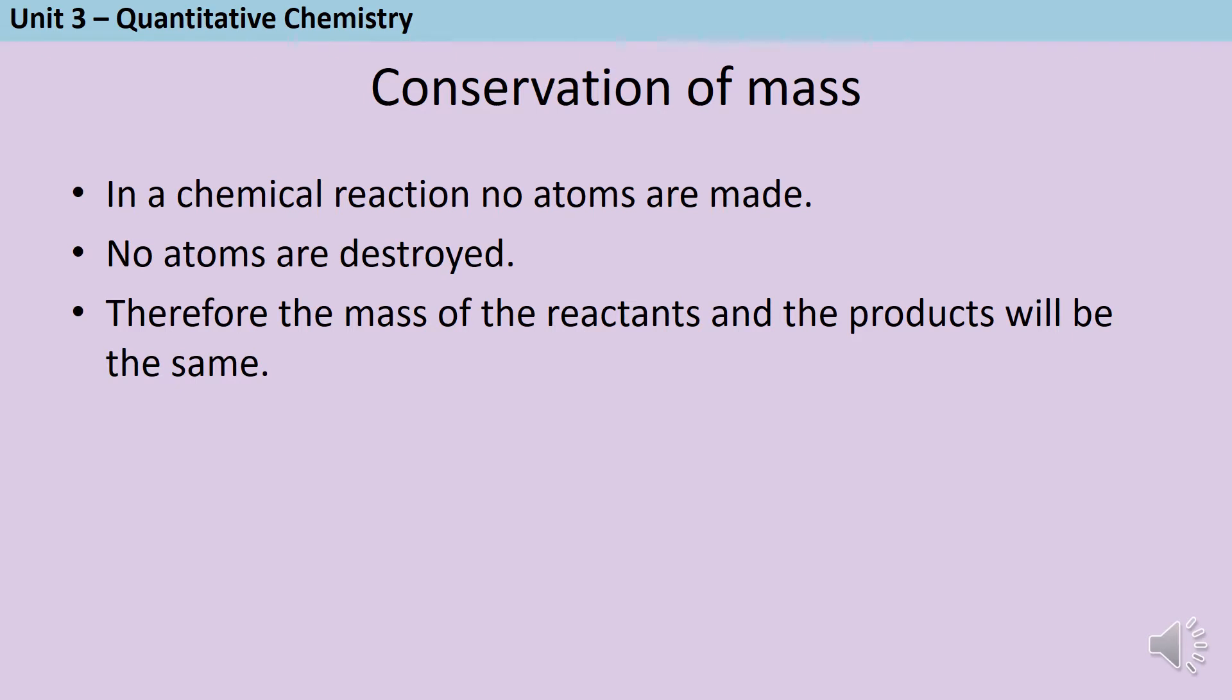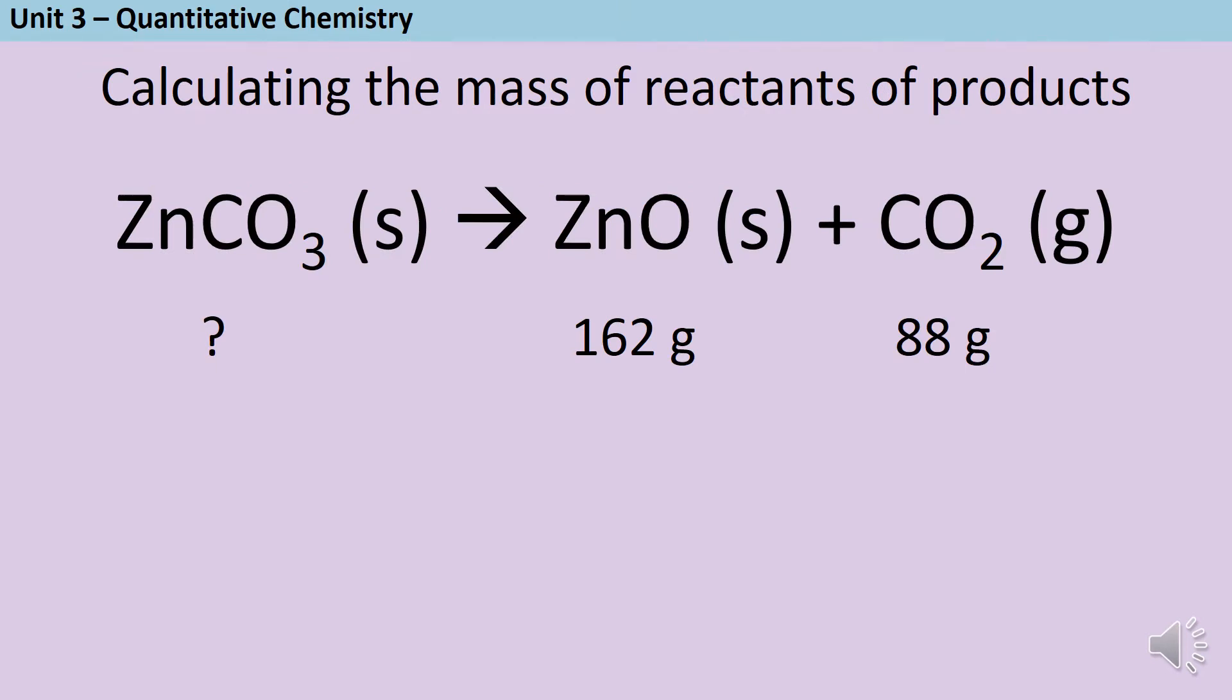It also means that the mass of the reactants and the mass of the products must be the same as each other. This means that I can calculate the mass of reactants or products in a chemical reaction if I know the mass of everything else. I need to remember that the mass of the reactants will equal the mass of the products.